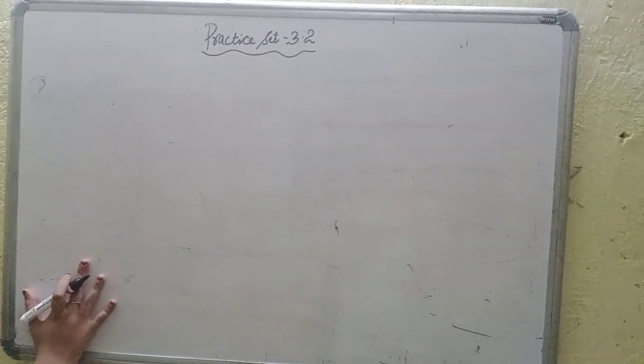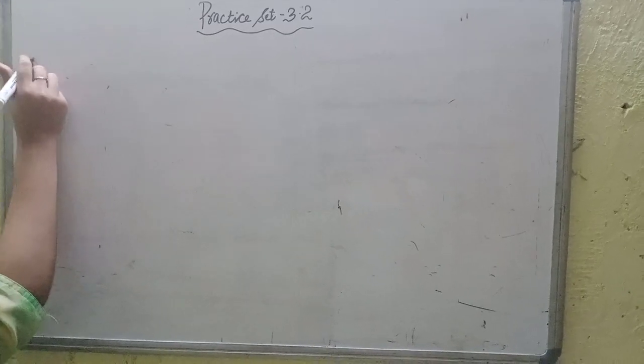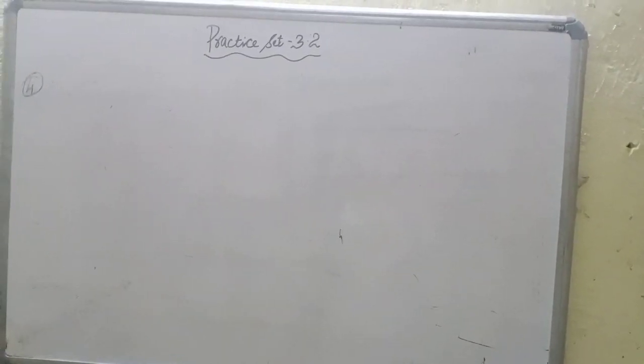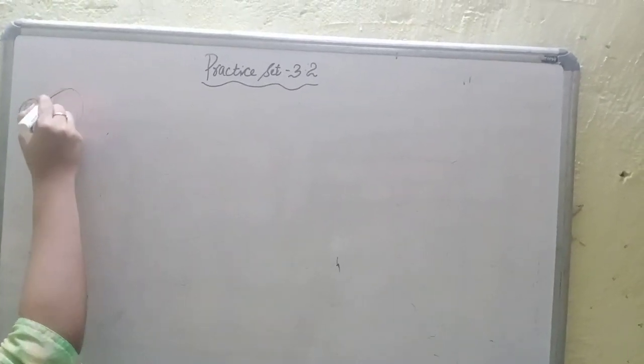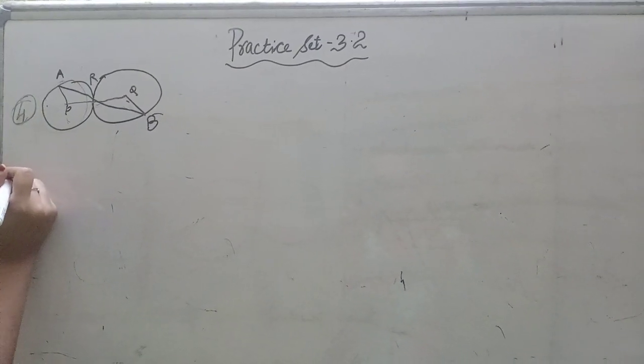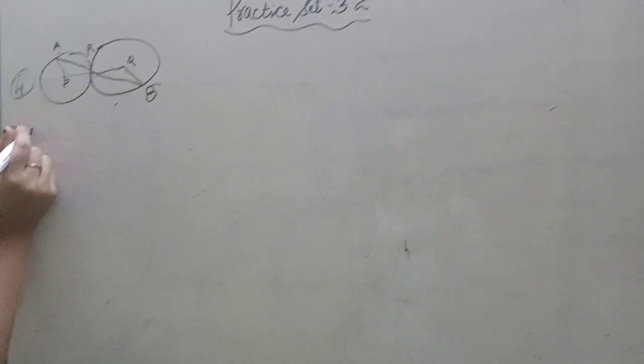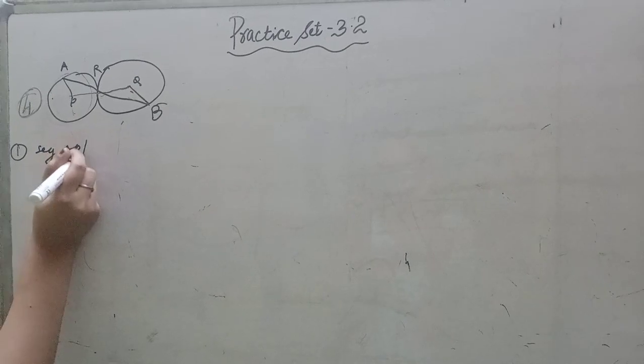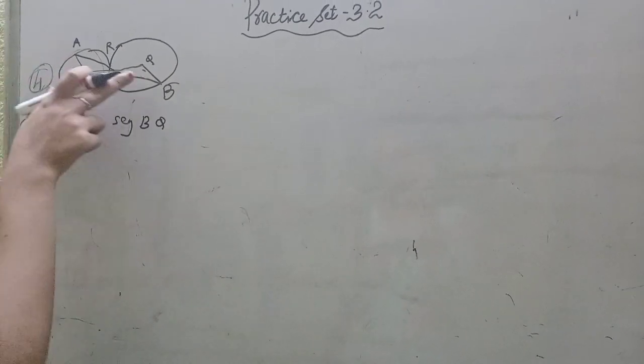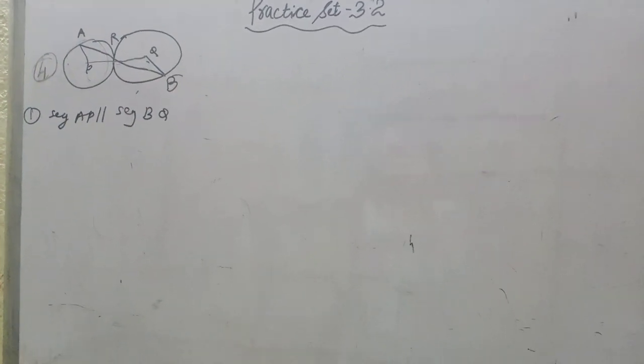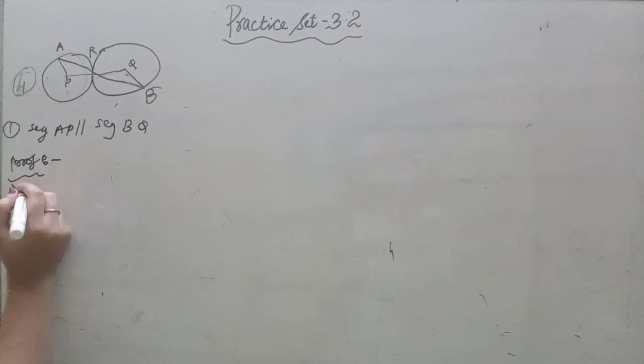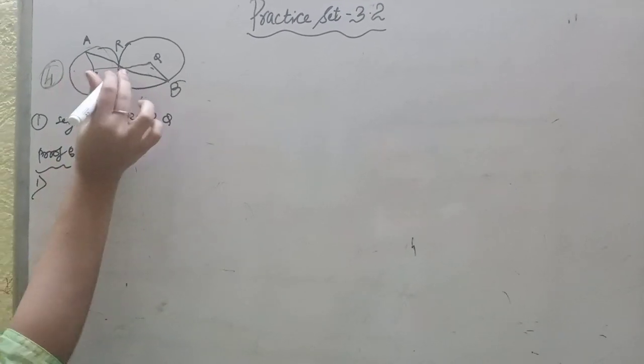And then start with the fourth question. The circles with center P and Q. First we have to find out in this segment AP parallel to segment BQ. So what do we do? Proof.